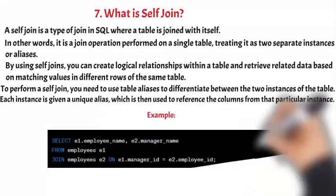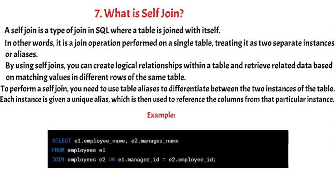In this example, the employees table is self-joined to retrieve the names of employees and their corresponding managers. The table is aliased as E1 and E2, representing two different instances of the same table. The join condition specifies that the manager_ID column of E1 should match the employee_ID column of E2, establishing the relationship between an employee and their manager.